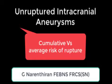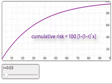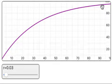Welcome to this discussion on cumulative and average risk of rupture of aneurysms. This graph shows the cumulative risk of rupture of an unruptured aneurysm which has an annual risk of rupture of 3%. This is an exponential graph with years on the x-axis and the cumulative risk of rupture on the y-axis.